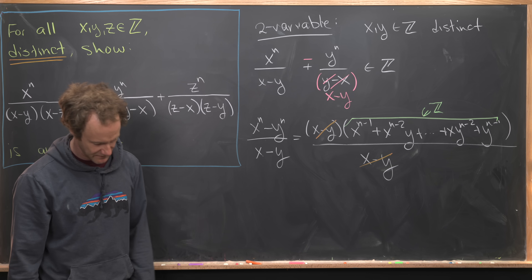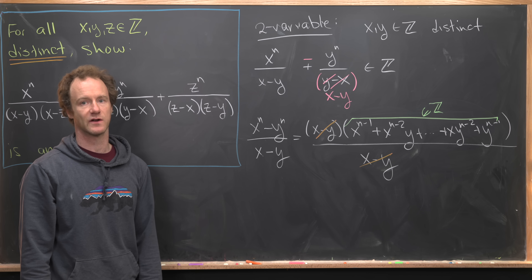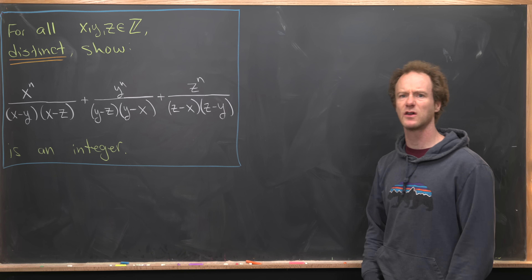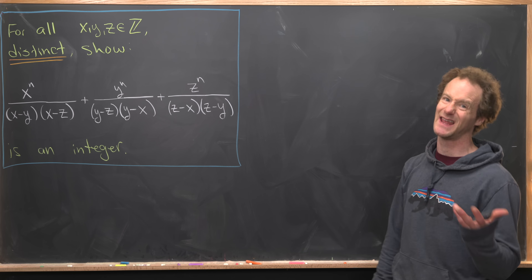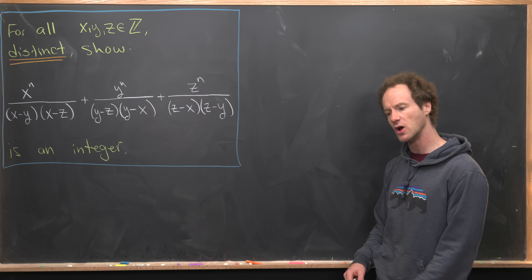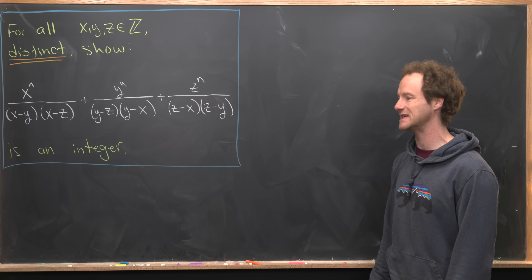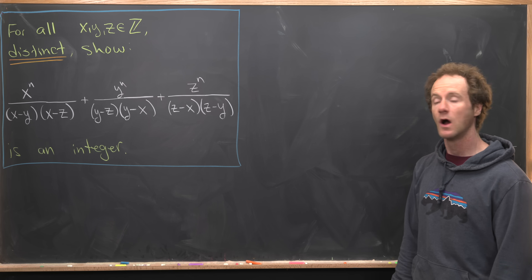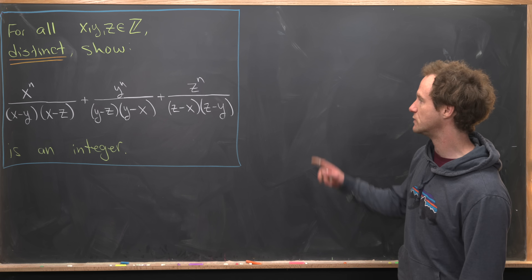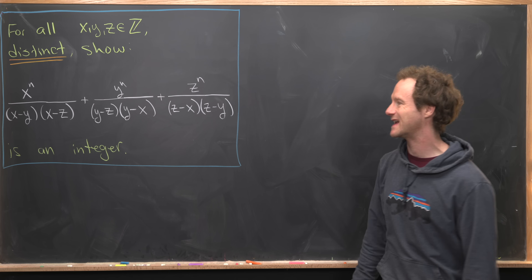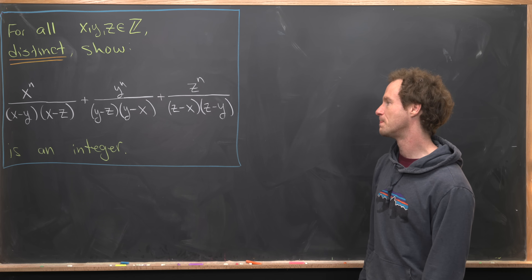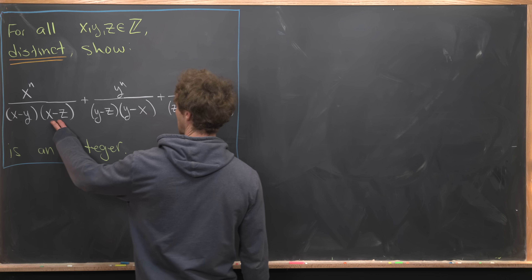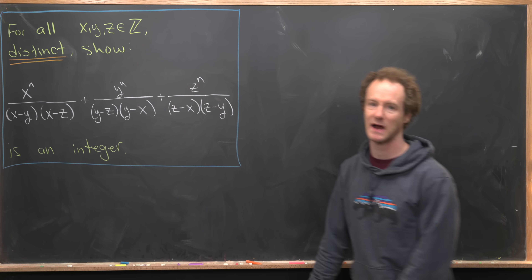Now we're ready to look at the main problem, the three-variable version — though I think this could be extended to an arbitrary number of variables. First, I want to combine the three terms by finding a common denominator. It's pretty clear that the denominator will be (x minus y)(x minus z)(y minus z).